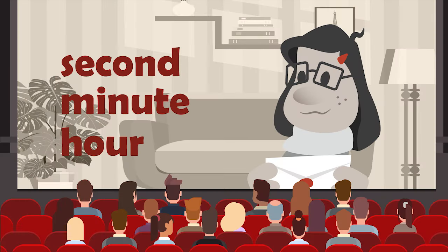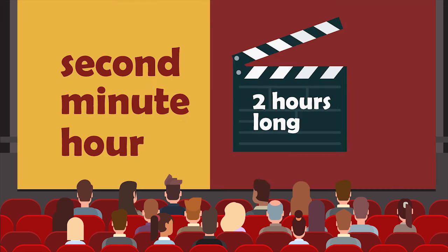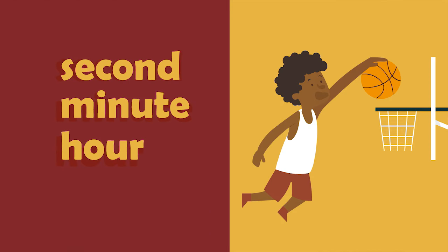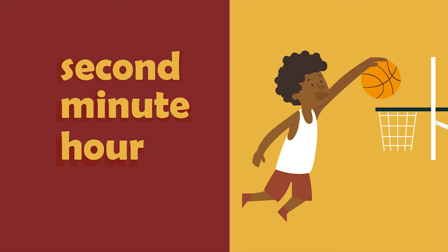What unit would be best for measuring the amount of time it takes to watch a movie? The hour is the best unit for this example. Most movies are about two hours long. Which unit is best for measuring the time it takes a basketball to go from a player's hands to the hoop? The second is the best unit of time to measure this brief action.